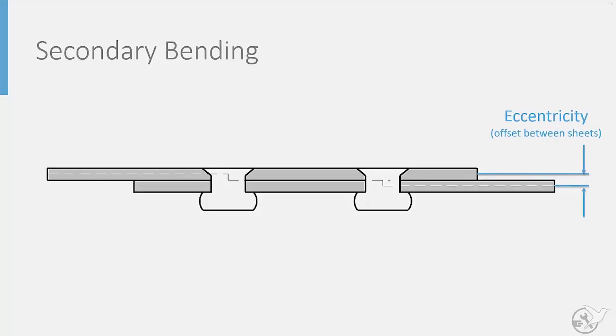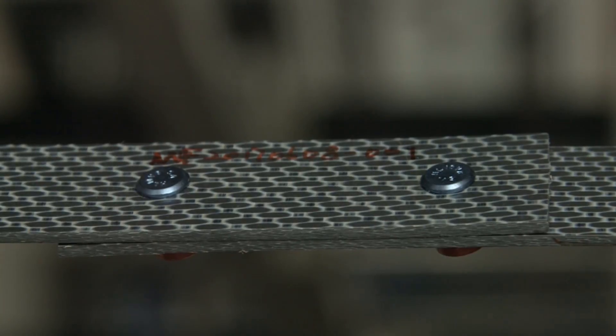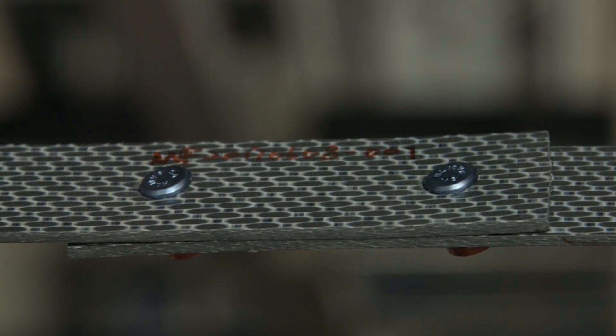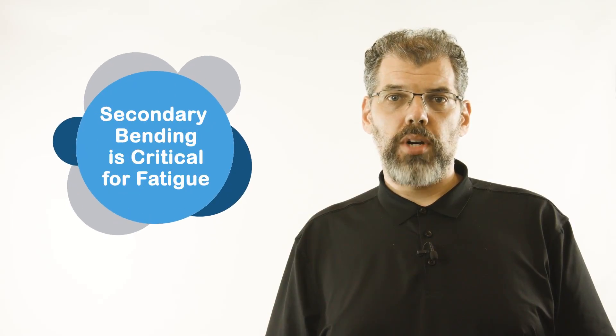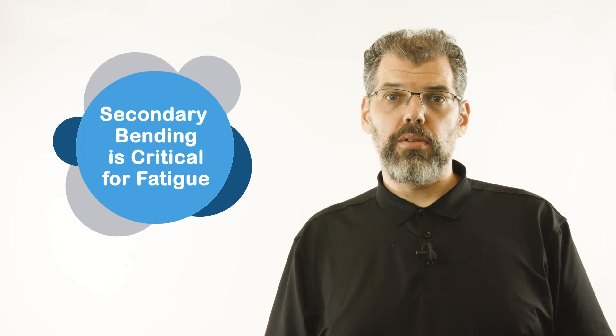Secondary bending is another phenomenon that can generate high stresses. Due to the offset between the joint sheets, bearing loads on each fastener will generate a bending moment that causes rotation and bending of the joint sheets. As we will see later, the added bending stresses due to this phenomenon can be critical for fatigue failure.